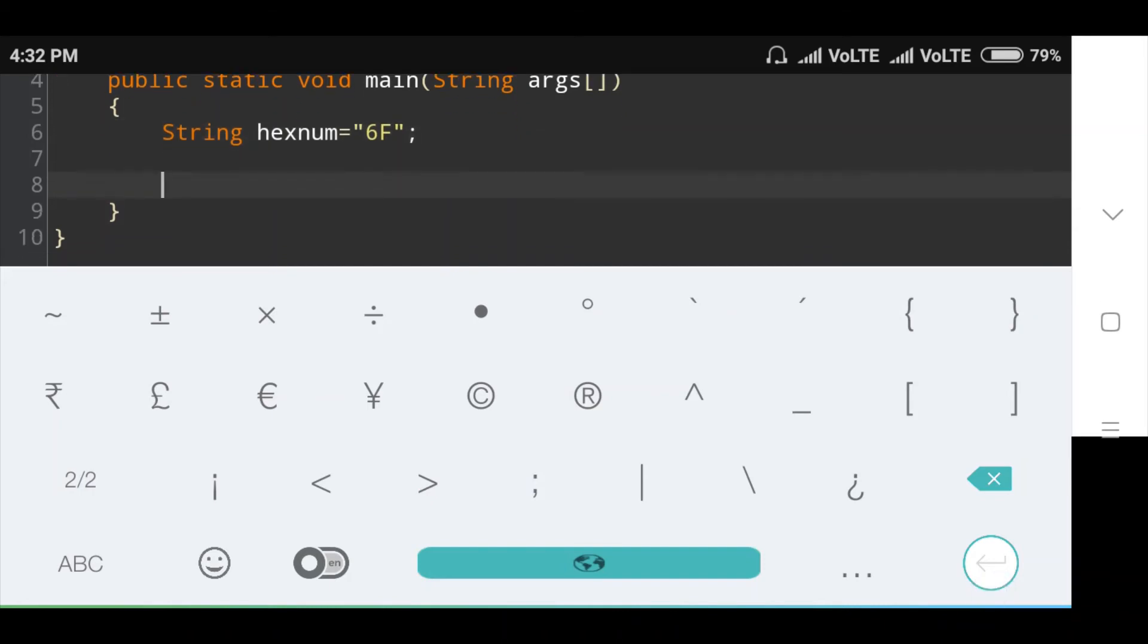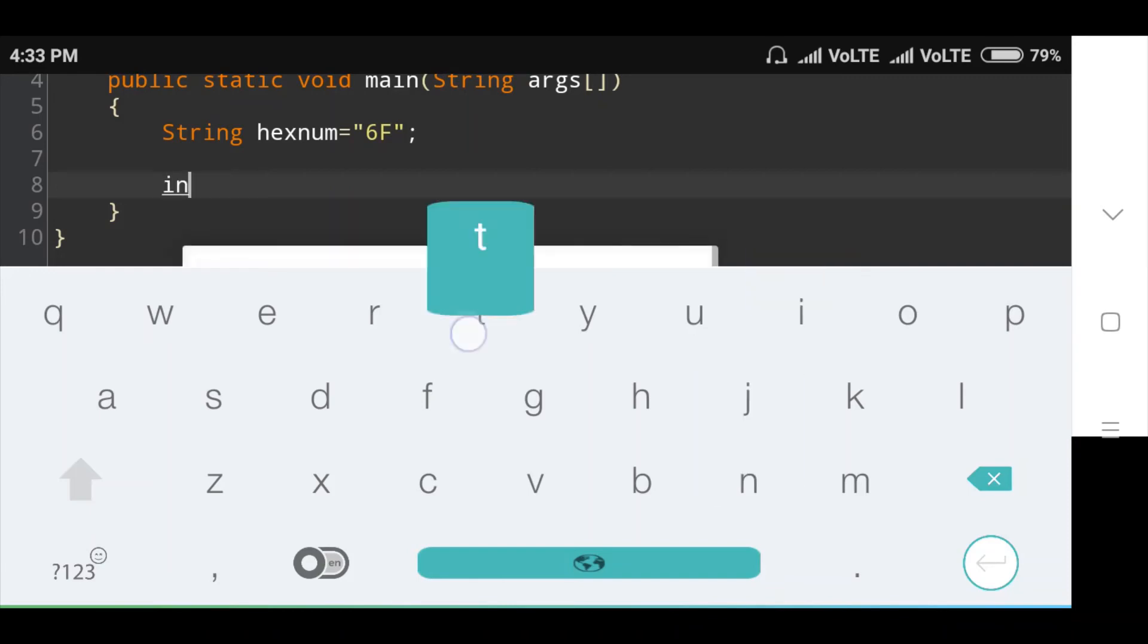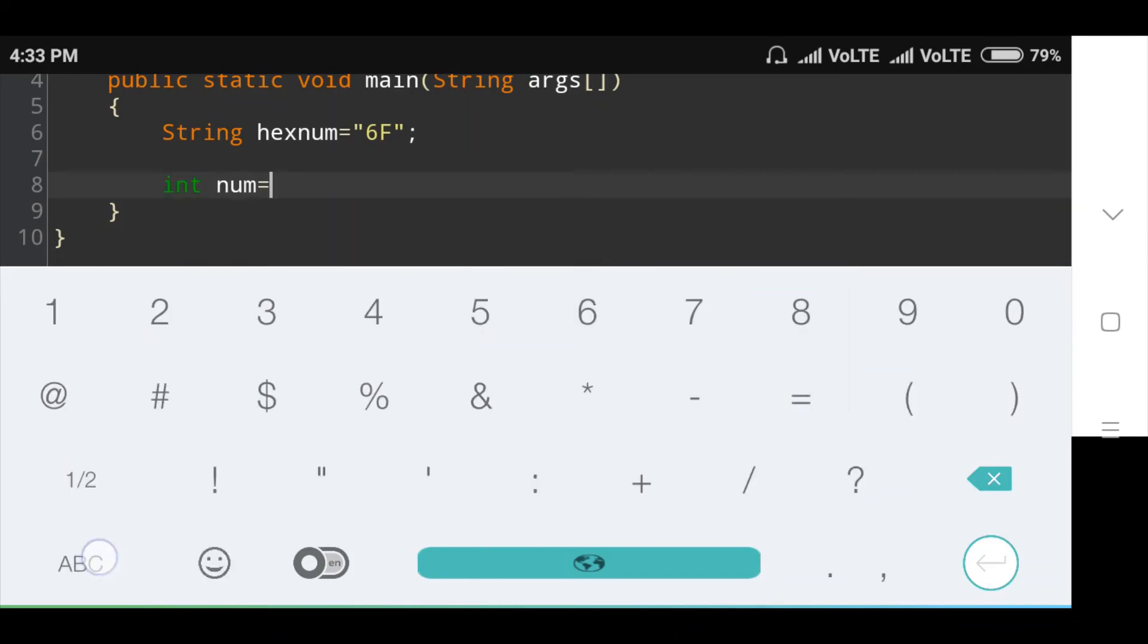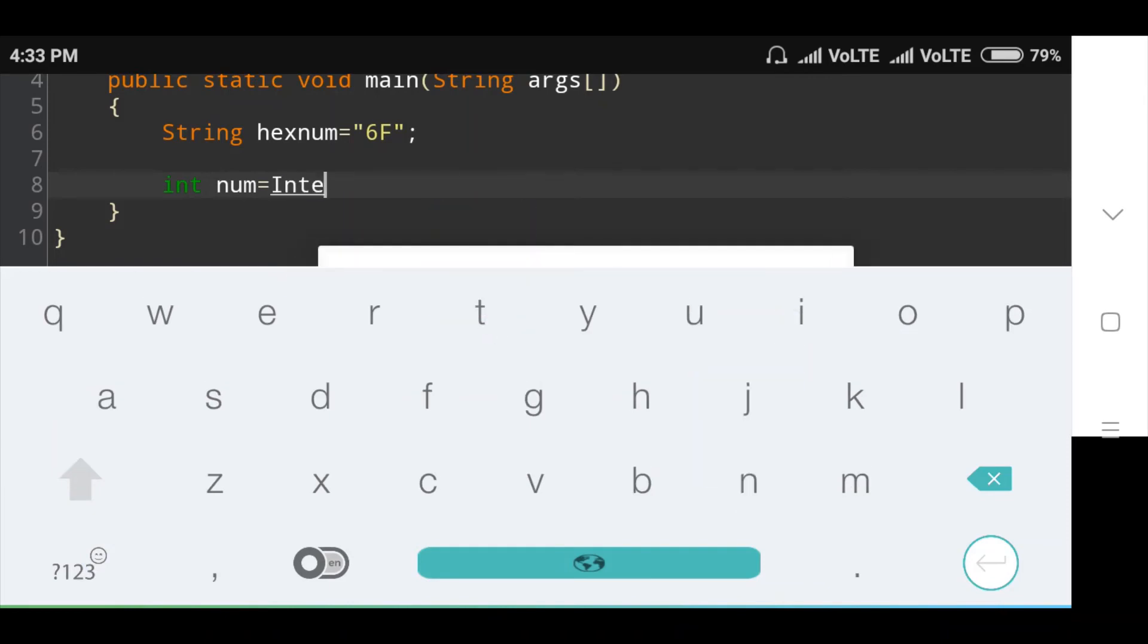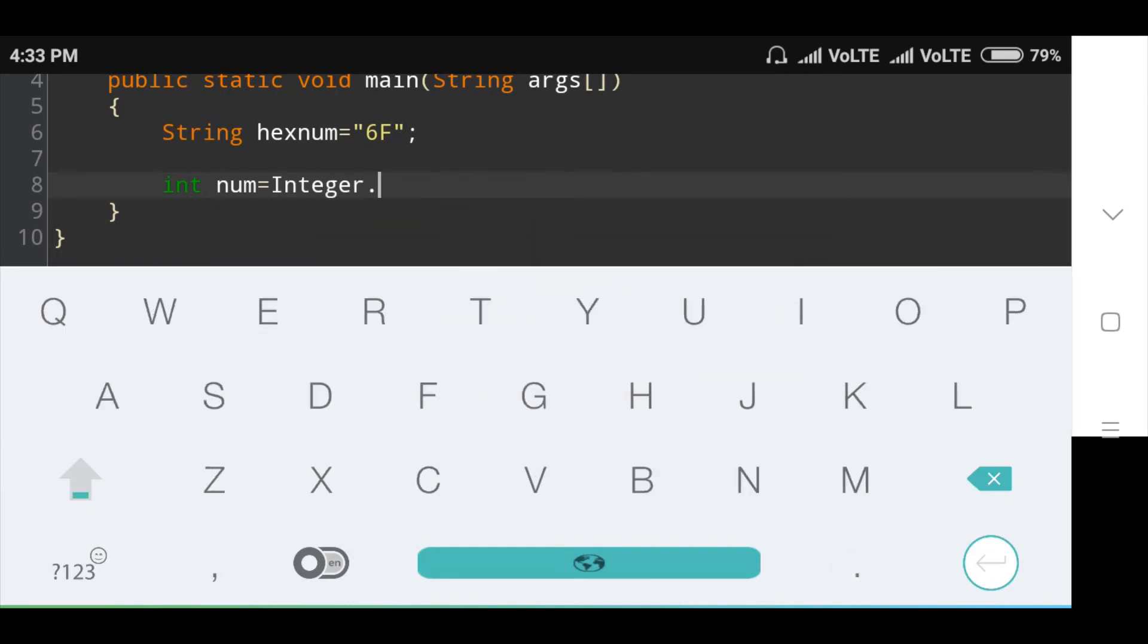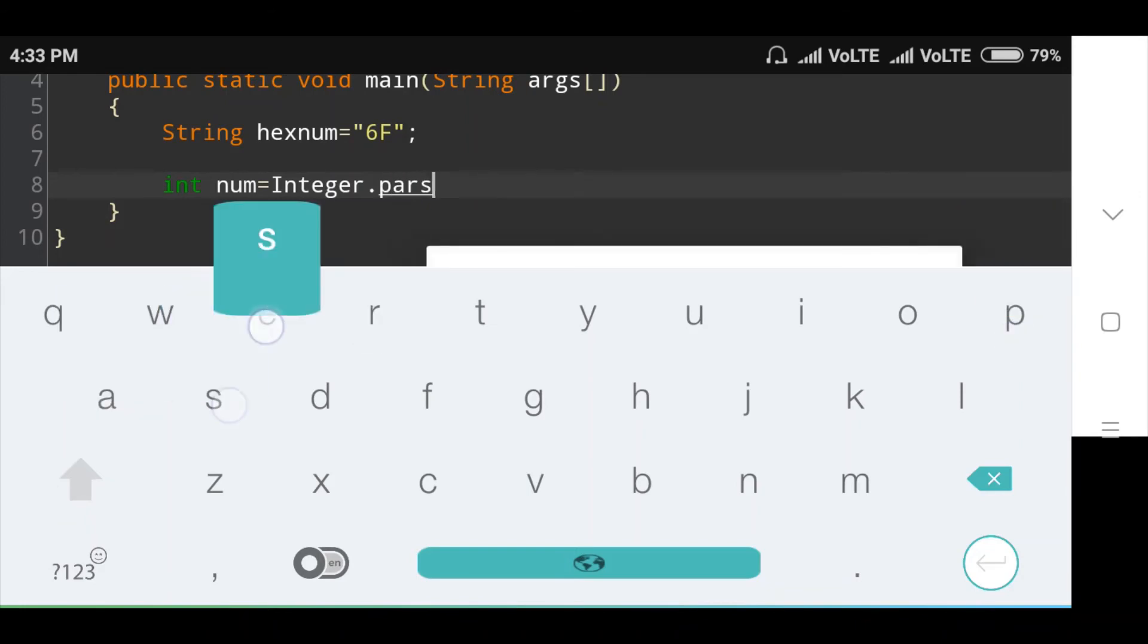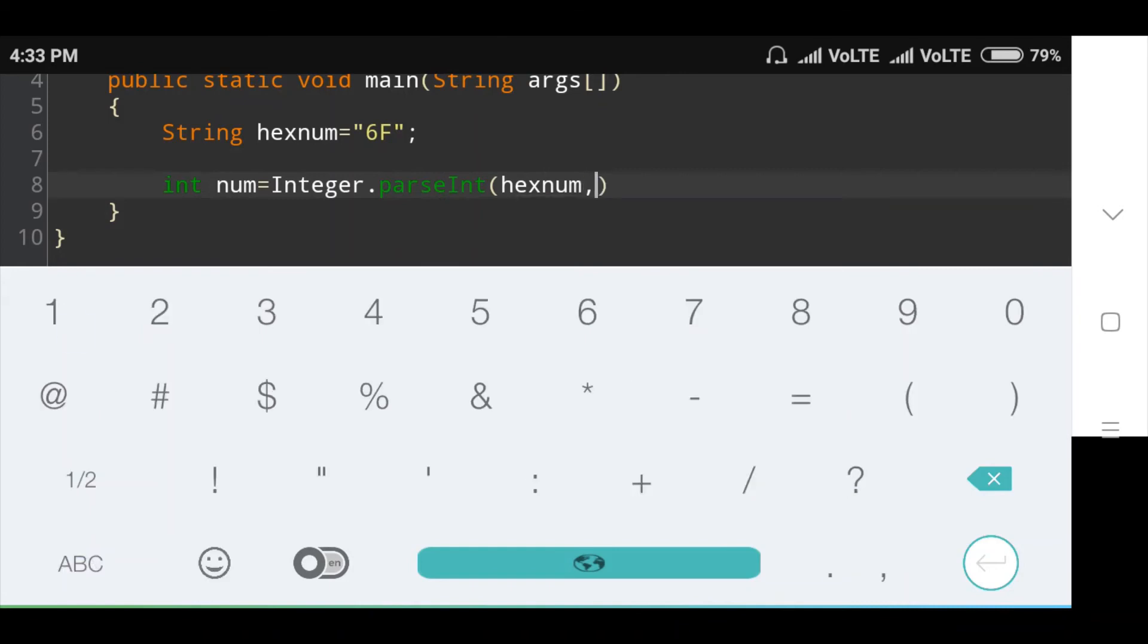Then converting hexadecimal to decimal by passing base 16 using Integer.parseInt method. int num equals Integer.parseInt(hexnum, 16).